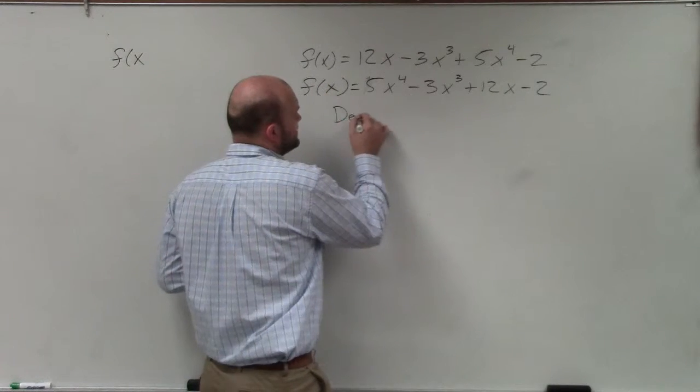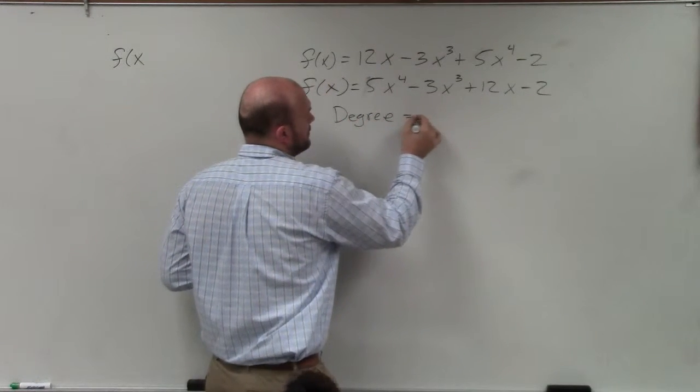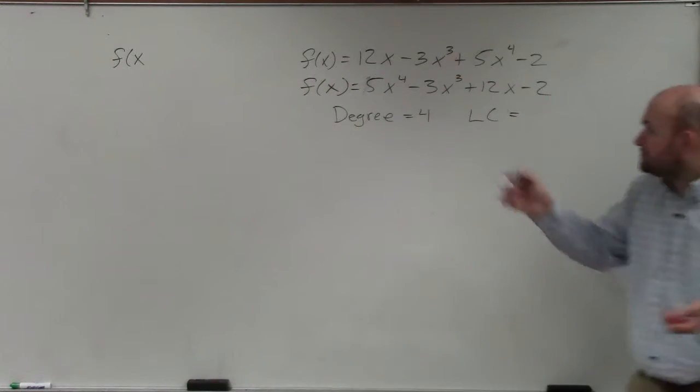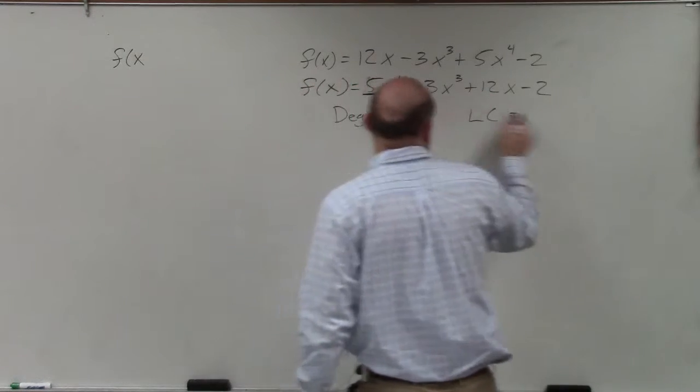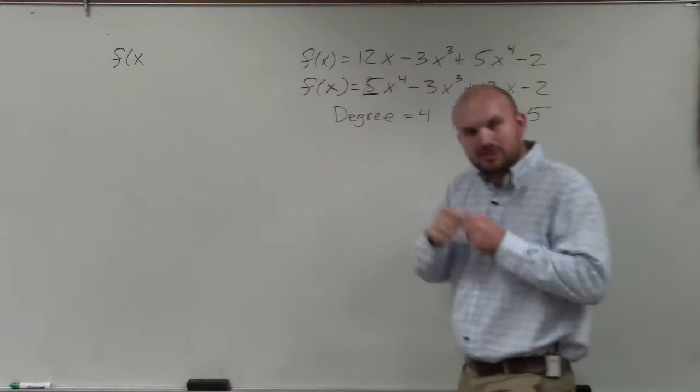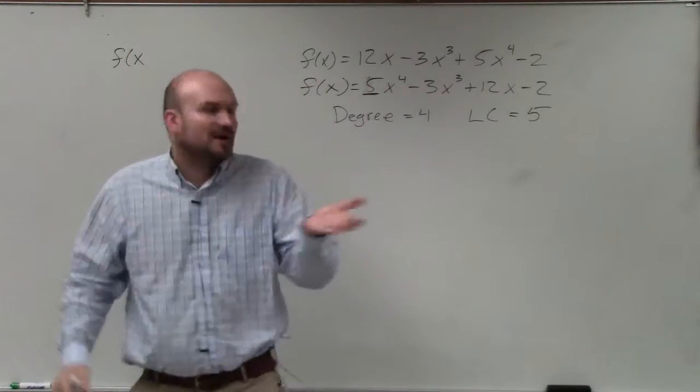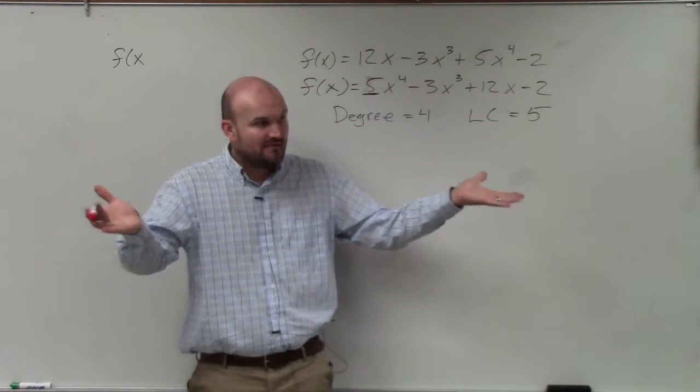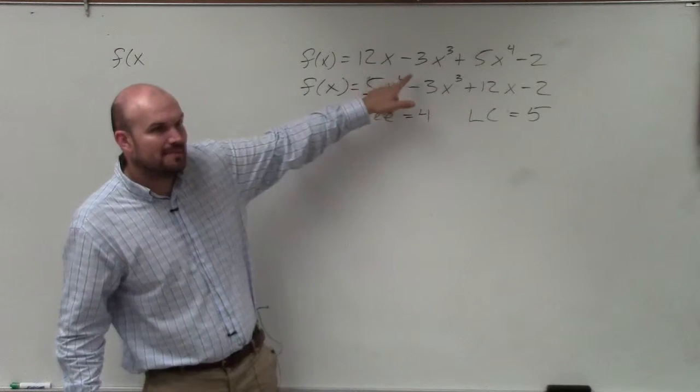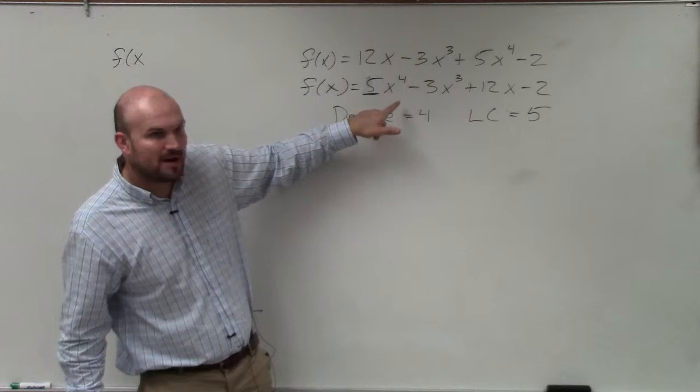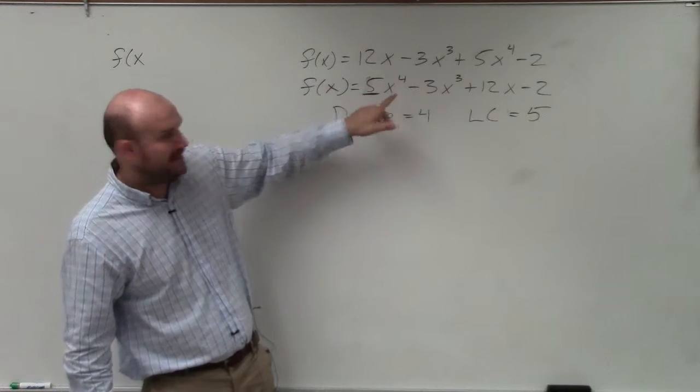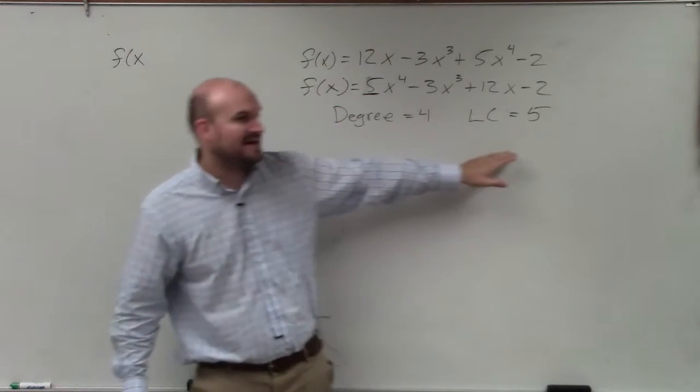So your degree is your highest power, 4. And your leading coefficient is going to be the coefficient of that exponent, which is 5. I don't know why I keep seeing x's with that. It's the coefficient, it's the number that's being multiplied. Remember we talked about power functions, right? Exponents have a base and a power. The base is not part of it. Your constant, your number is your coefficient, what you're multiplying your exponent by. So your coefficient is 5, not 5x.